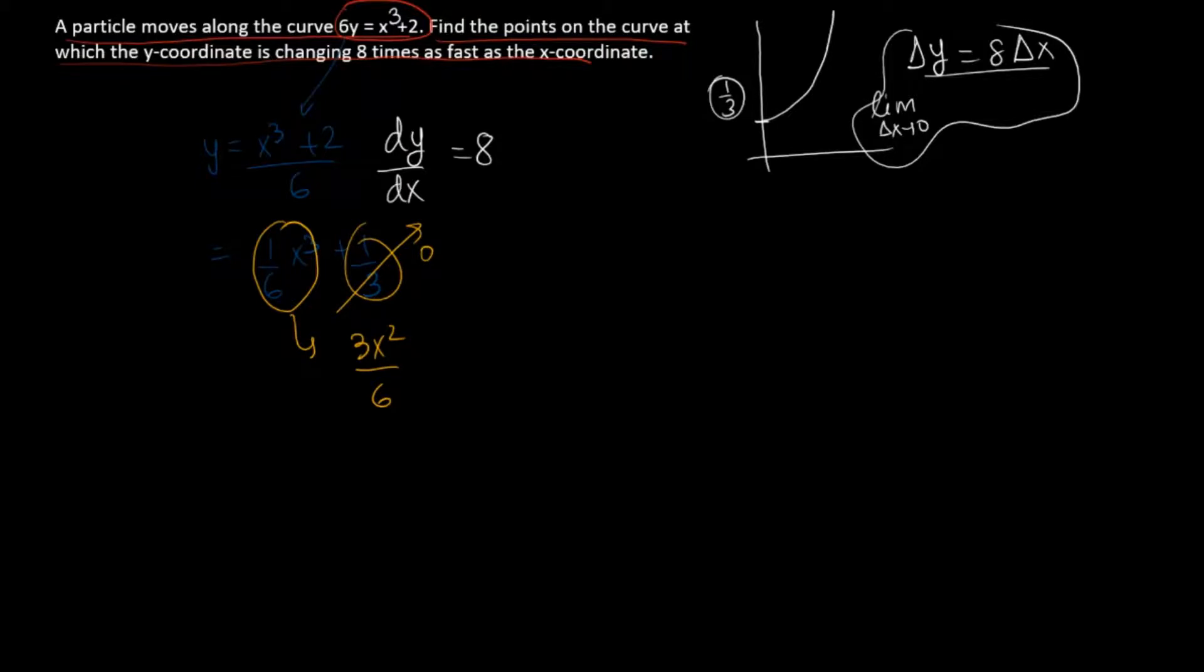3x squared over 6, you can write as x squared over 2. Now, x squared over 2 is equal to 8. Take 2 to the other side. We will get x squared is equal to 16. It has 2 solutions.